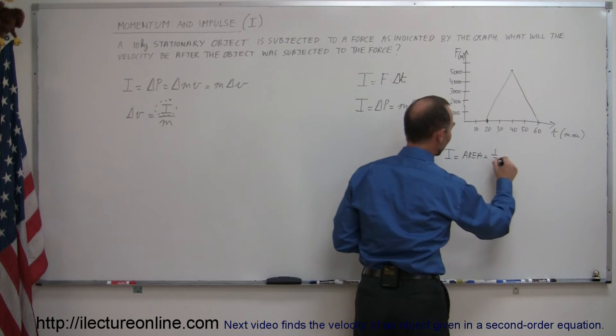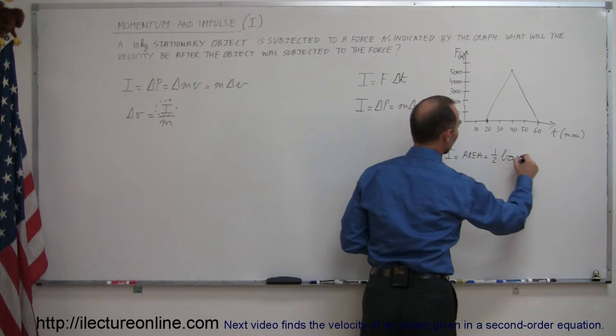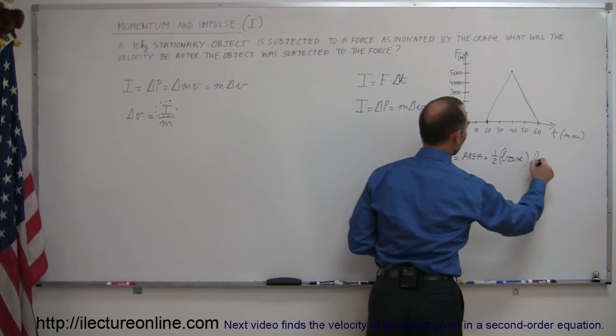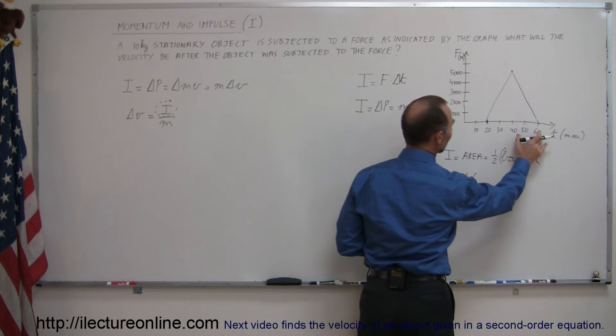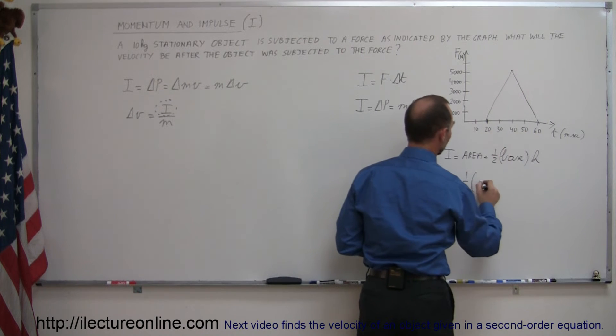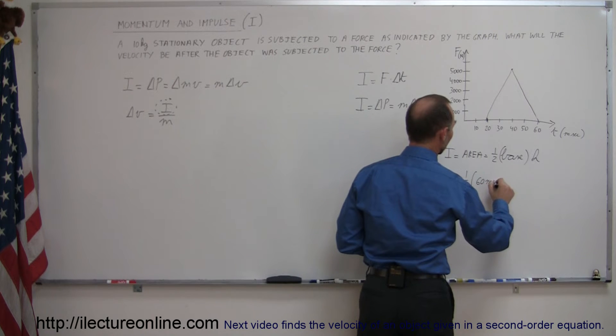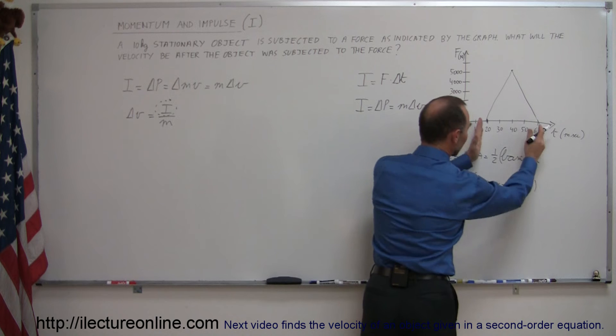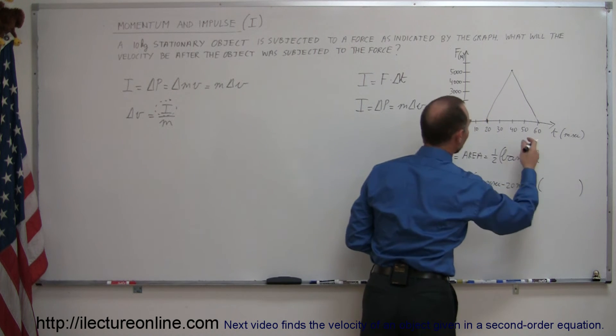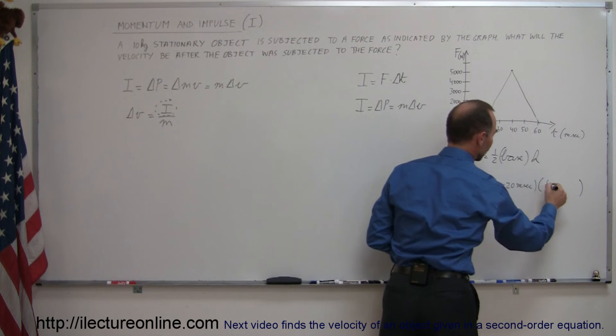So it's one half the base times the height. The base is the difference between 60 milliseconds and 20 milliseconds, so that's 40 milliseconds, and then multiply it times the height which is 5000 newtons.